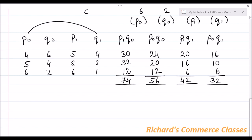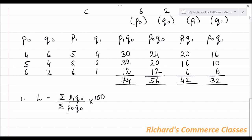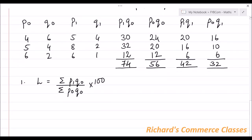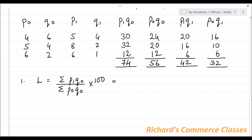Now we can calculate all three index numbers. Starting with Laspeyres' Index Number: L = (ΣP1Q0 / ΣP0Q0) × 100 = (74 / 56) × 100 = 132.14.